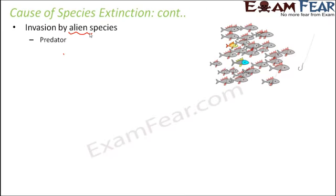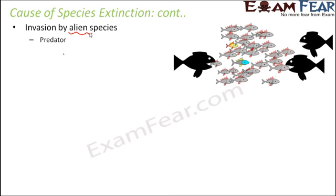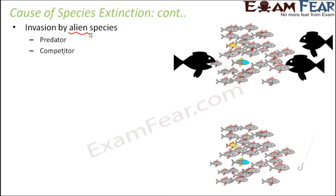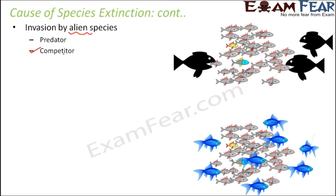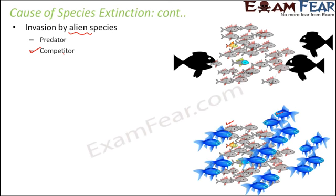Alien species invasion can also happen when the introduced species is a competitor. If new fishes introduced into an ecosystem feed on the same food as the existing fishes, both species compete for the same resources without preying on each other. The introduction of these alien species poses a threat to the existing species because they are competing for the same resources for survival. Over time, the alien species keep increasing in number, further threatening the original species.